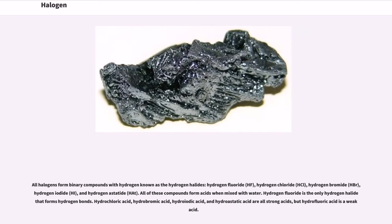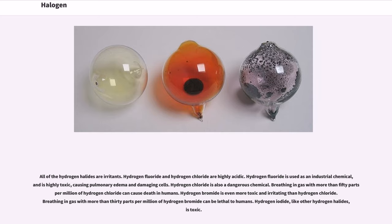All halogens form binary compounds with hydrogen known as the hydrogen halides: hydrogen fluoride (HF), hydrogen chloride (HCl), hydrogen bromide (HBr), hydrogen iodide (HI), and hydrogen astatide (HAt). All of these compounds form acids when mixed with water. Hydrogen fluoride is the only hydrogen halide that forms hydrogen bonds. Hydrochloric acid, hydrobromic acid, hydroiodic acid, and hydroastatic acid are all strong acids, but hydrofluoric acid is a weak acid. All of the hydrogen halides are irritants. Hydrogen fluoride and hydrogen chloride are highly acidic. Hydrogen fluoride is used as an industrial chemical and is highly toxic, causing pulmonary edema and damaging cells.